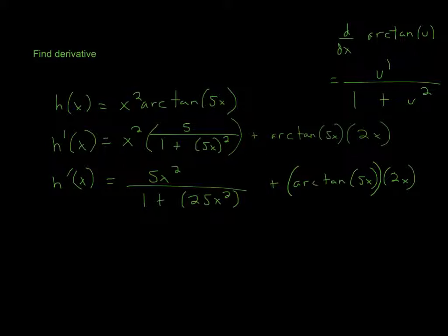So this is product rule. It's x squared, the first term, times the derivative of the second term. That's u prime - whatever is inside the parentheses, take the derivative. It'll be 5 on top over 1 plus 5x squared, plus the second term arctangent of 5x, times the derivative of the first term. That'll be 2x, just power rule.